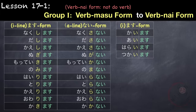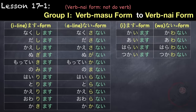However, for verbs with an i-syllable before masu, the conjugation is different. For kaimasu it becomes kawanai — the i-syllable becomes the wa-syllable. So kaimasu becomes kawanai, aimasu becomes awanai, haraimasu becomes harawanai, tsukaimasu becomes tsukawanai, and so on.